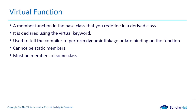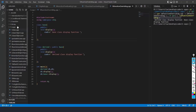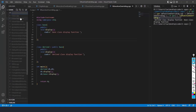That is all about virtual functions. Now let's jump to VS Code and understand by code what virtual function means. We are going to use the virtual keyword. I will create one more file named 19 and I will write virtual.cpp.